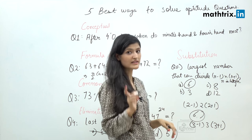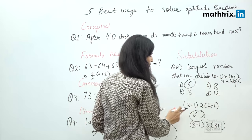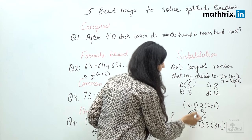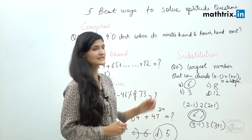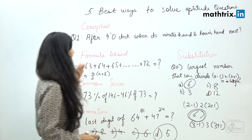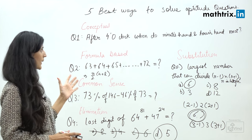So keeping that in mind, our answer is 6. These are the five best ways to solve aptitude questions. You have to practice to identify where you should use which method.